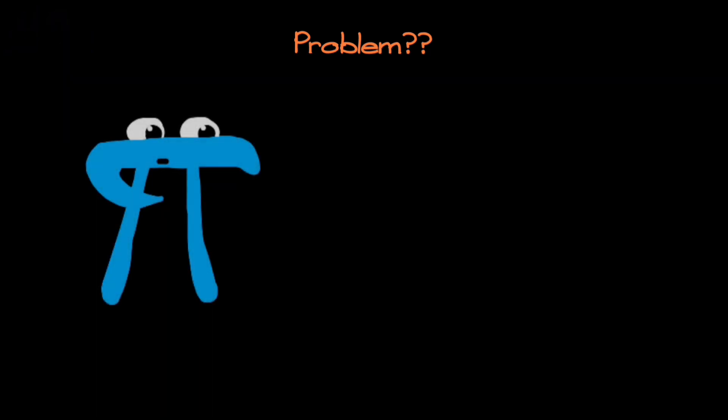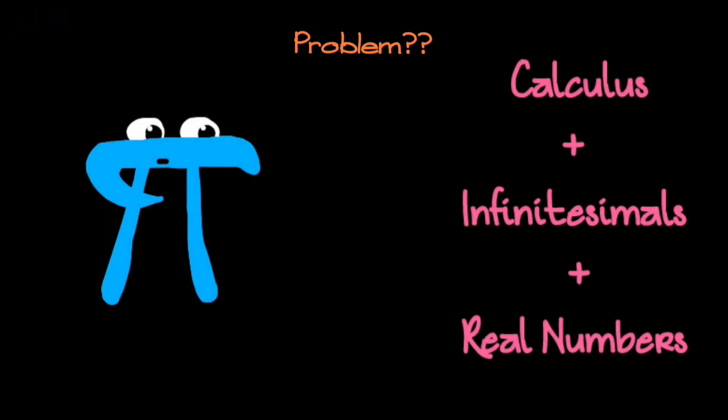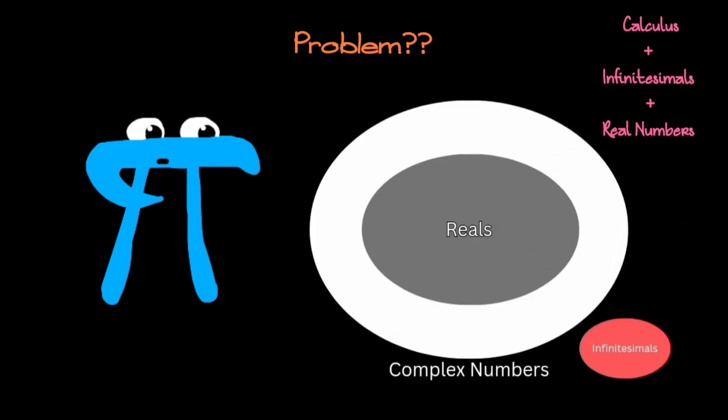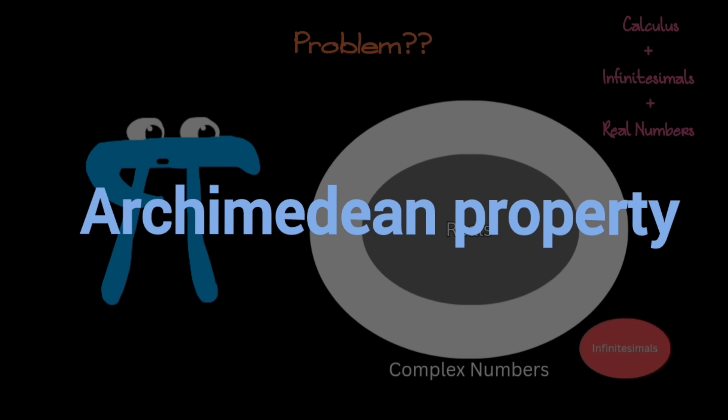Where is the problem? There are two major problems, and those problems are associated with the formation of calculus using infinitesimals in the usual setting of real numbers. Infinitesimals can't exist in the usual setting of real numbers, because real numbers satisfy an important property called the Archimedean property of real numbers.